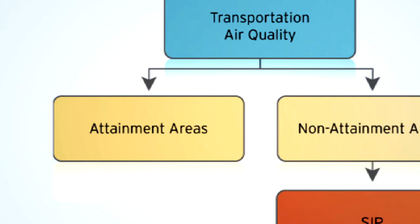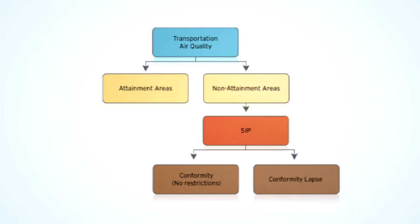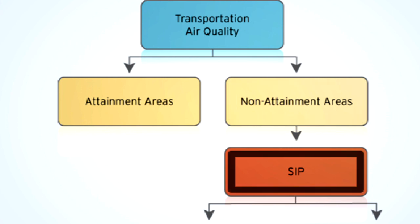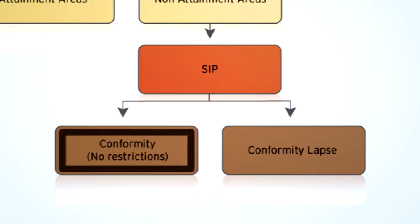In the arena of transportation air quality, there are terms used to describe the status of air quality in specific areas. Non-attainment means an area is not meeting national air quality standards. A State Implementation Plan, or SIP, is a plan for the area to get back into attainment. The term conformity refers to whether or not an area is complying with the SIP or allowances established for the particular area.